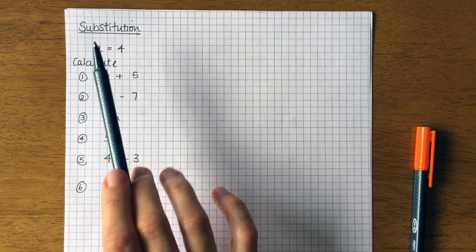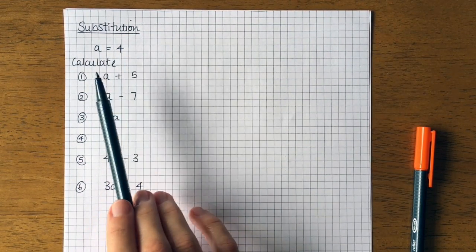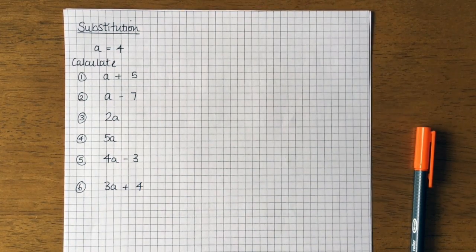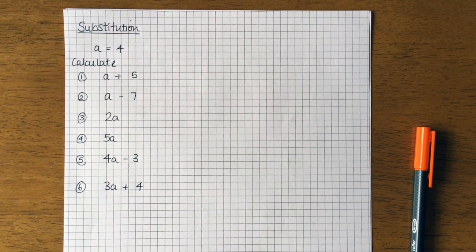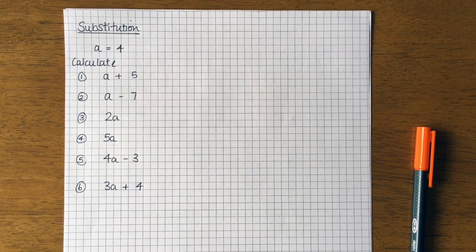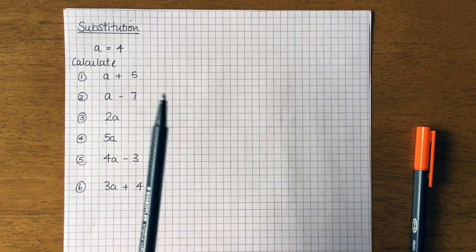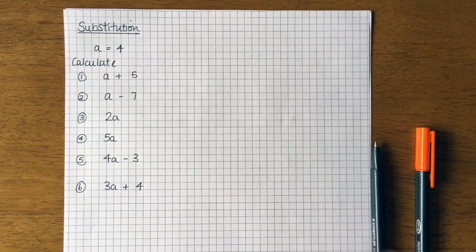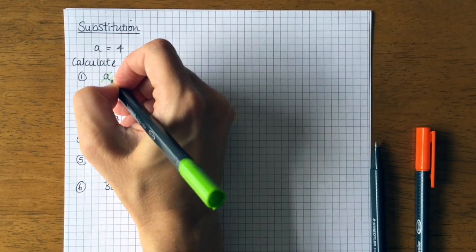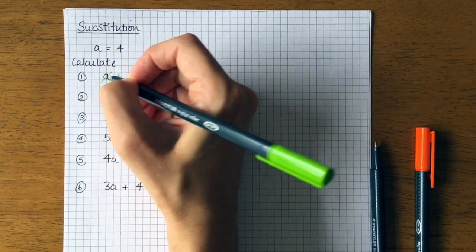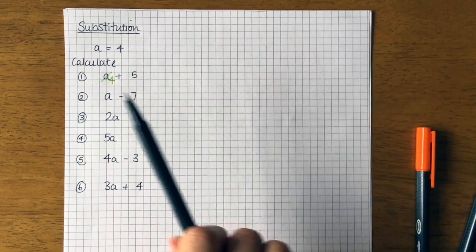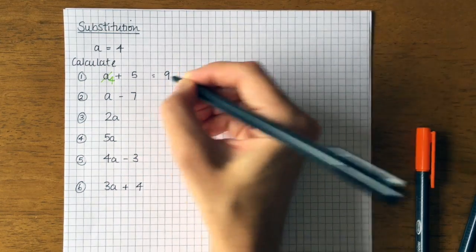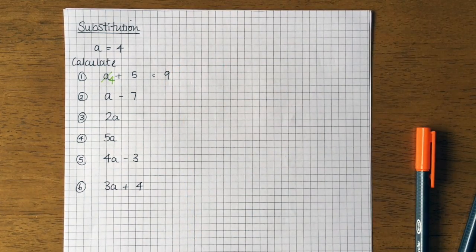So I'm told that a is equal to four, so if I take the a out I have to replace it with four. That's all you need to do with these substitution questions. So for the first one, I'm gonna replace the a with four. So I'm gonna cross it out and I'm gonna put four there, because I've substituted it and replaced it with four. So four plus five, I just work out the calculation, so the answer is nine.